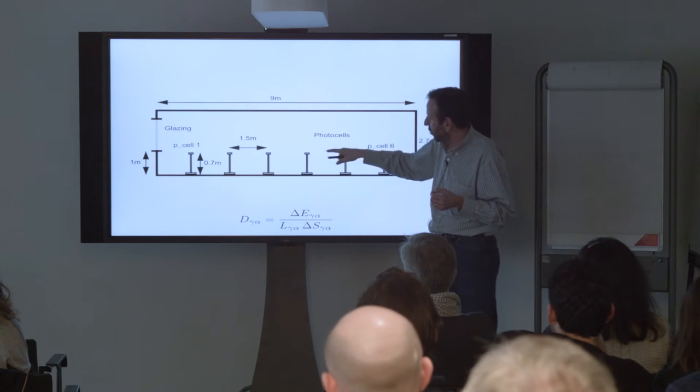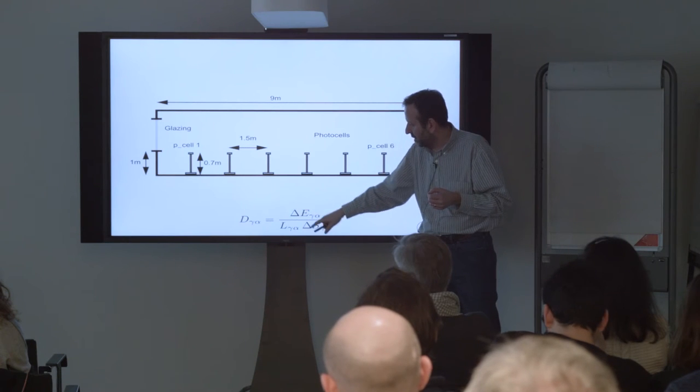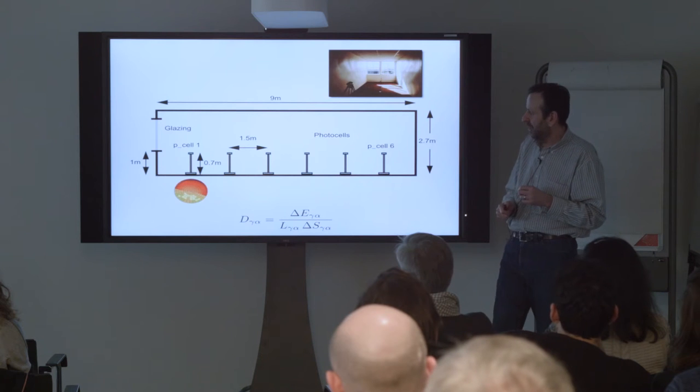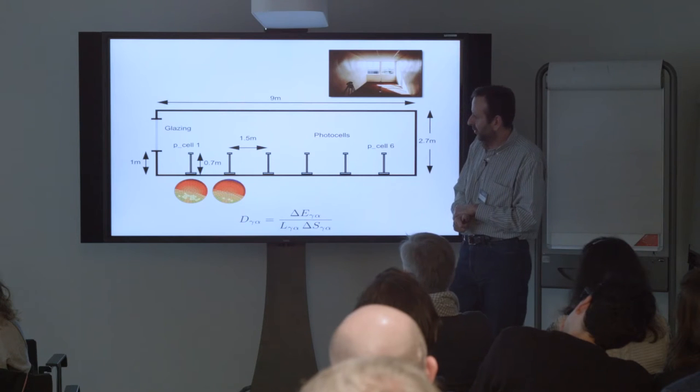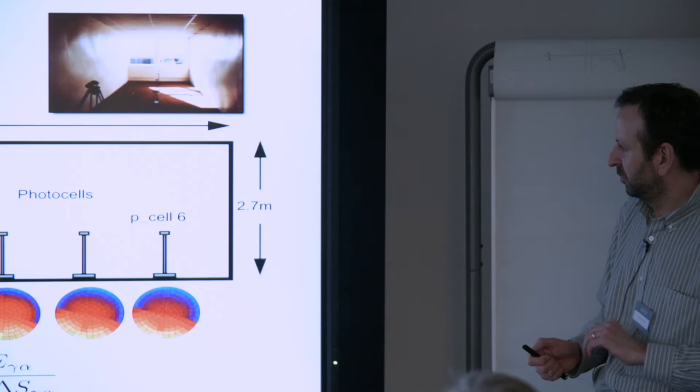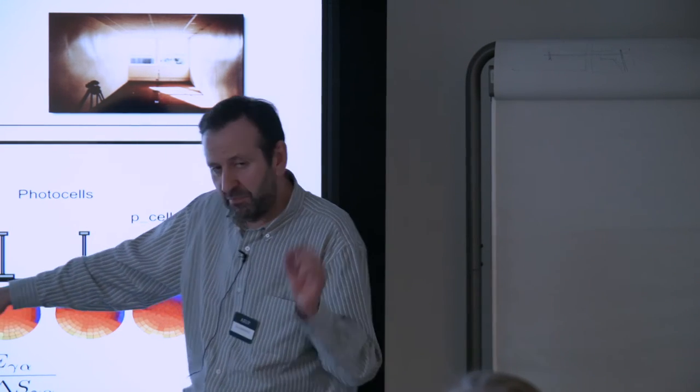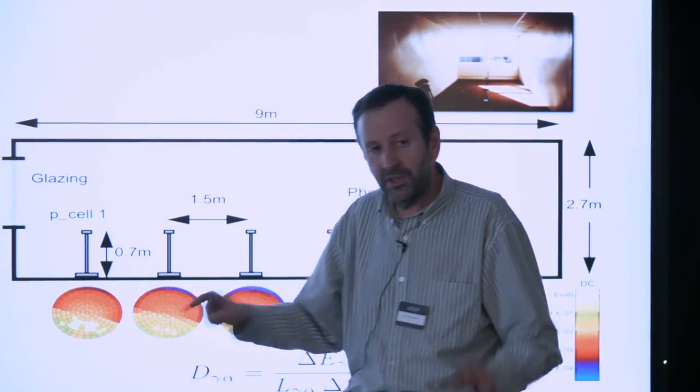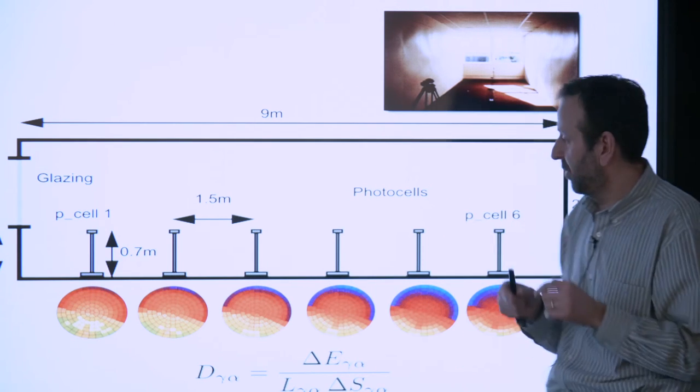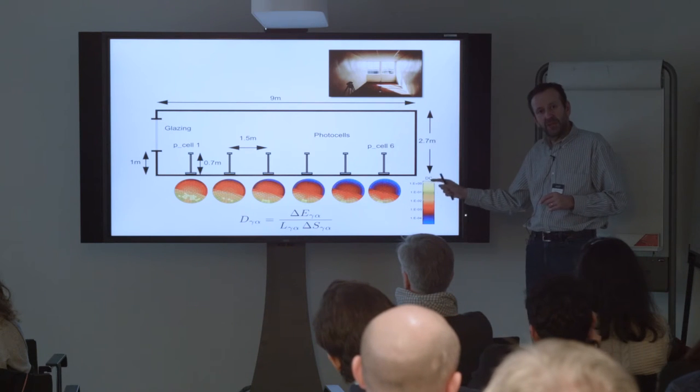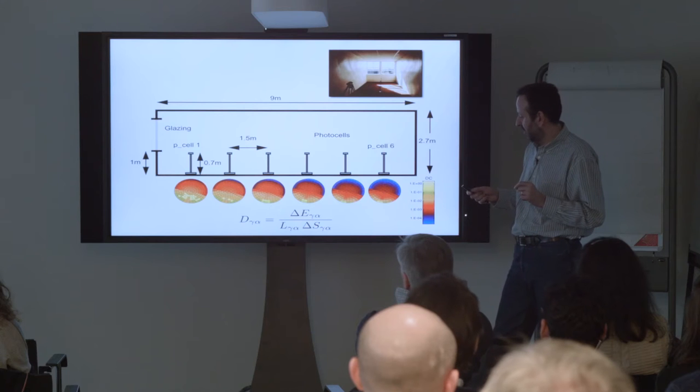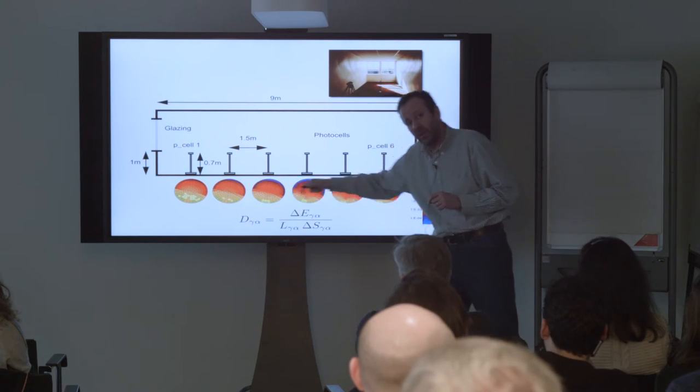So we'll predict the illuminance at each point in here from each patch of sky in turn using that equation. Here's what the daylight coefficients look like at each of the different photocell points. You can get some sort of sense that there's clearly you're seeing the window here and it's getting smaller and smaller because the highest daylight coefficients which is shaded bright yellow are the direct view of the sky through the window. It's shifted over a little bit here because the room is actually a little bit west of south and notice there's four orders of magnitude here in the daylight coefficient value.